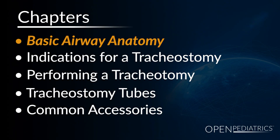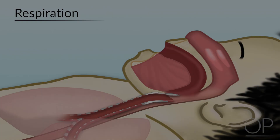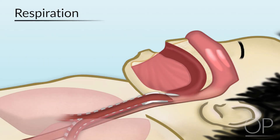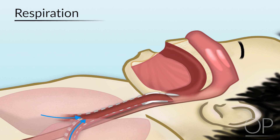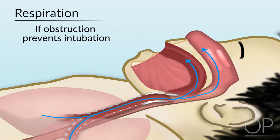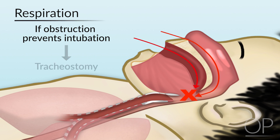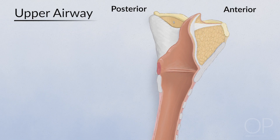Basic Airway Anatomy. Normal respiration requires air to pass through the nose and mouth into the pharynx, through the larynx, and then down to the lower respiratory tract. Obstruction at any of these sites can lead to respiratory distress, and depending on the site of obstruction, can prevent intubation and necessitate a tracheostomy. A brief discussion of the basic anatomy of the upper airway is important for understanding complications relating to tracheostomy management.